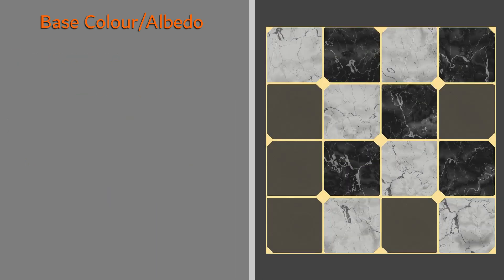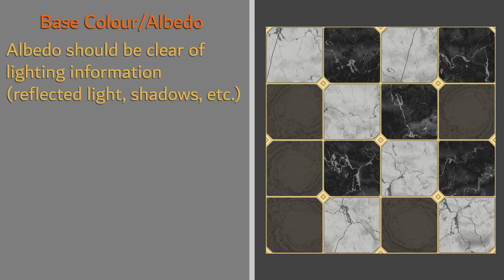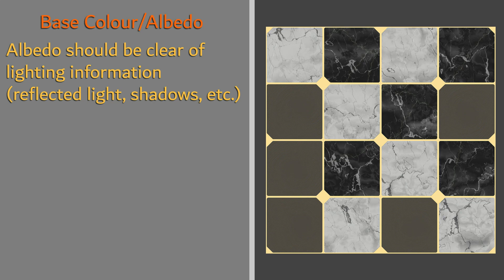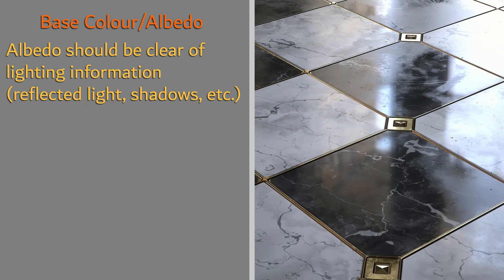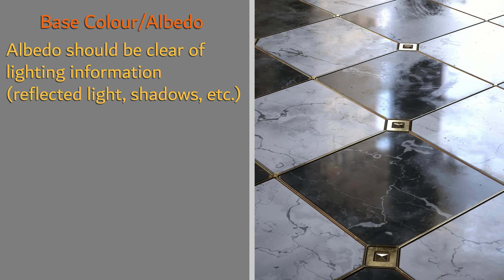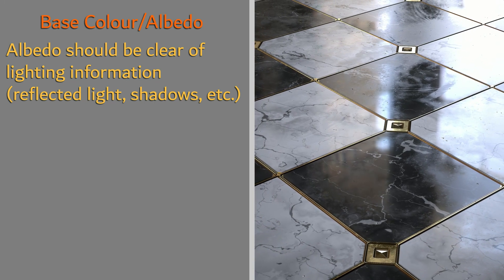It is important to keep the albedo map with color values only, and clear of all lighting information as well. In the PBR workflow, we utilize other maps to drive the lighting information of the material. By adding lighting information into the albedo map, we are creating potential for the material to look inconsistent in various lighting conditions.